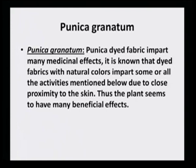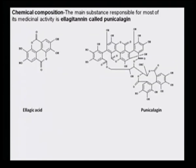Coming to the fourth dye, which is yellow in color, obtained from the rind of the fruit called Punica granatum or pomegranate. This dye also has a lot of medicinal property. The main substances responsible for the medicinal property are the ellagic tannin and also the Punicalagin. This ellagic acid and Punicalagin are two condensed molecules with several hydroxy groups, and that is what imparts the medicinal property to the dye.